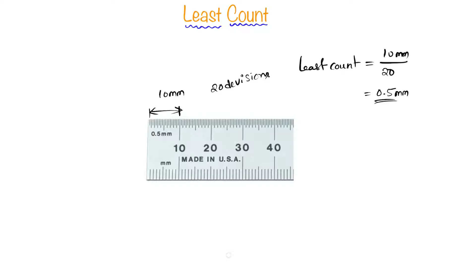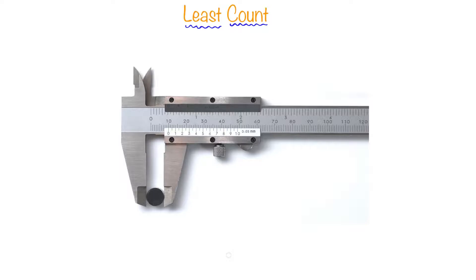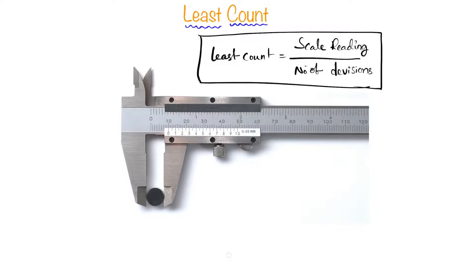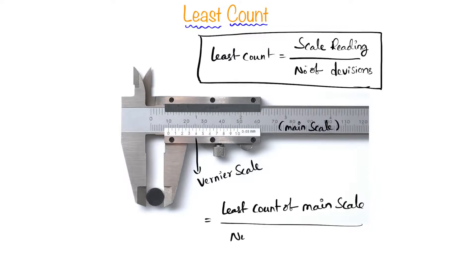Now let's do it for vernier calipers. In vernier calipers there are two scales — this is the main scale and this is the vernier scale. For vernier calipers, the least count formula is: least count of main scale divided by number of divisions on the vernier scale.